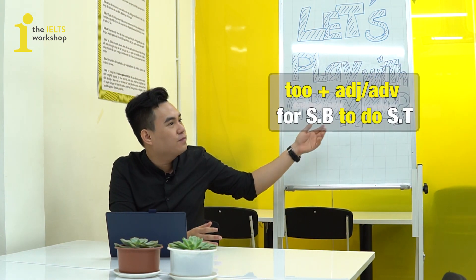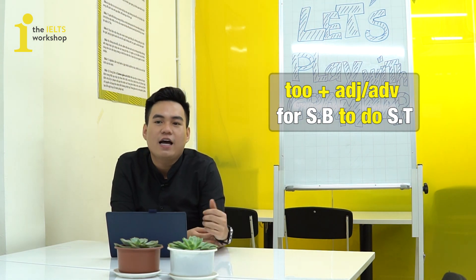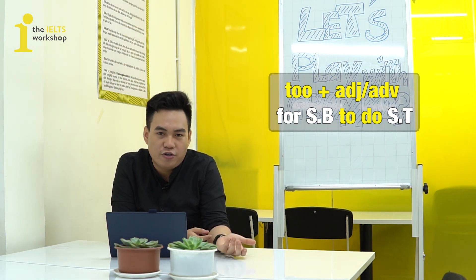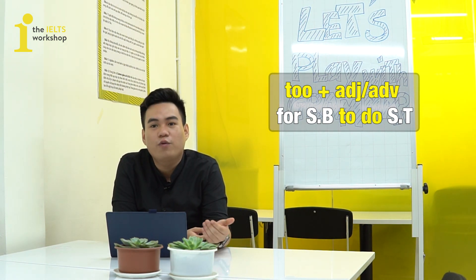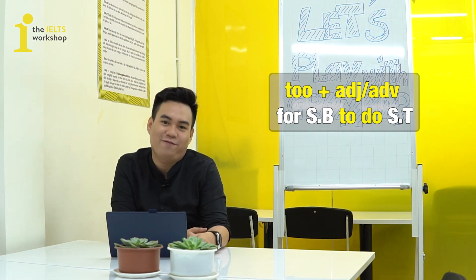So the structure we derive is: 'too' plus adjective or adverb, 'for somebody to do something'. Next, we will learn about the second structure — that is the 'enough to' structure.